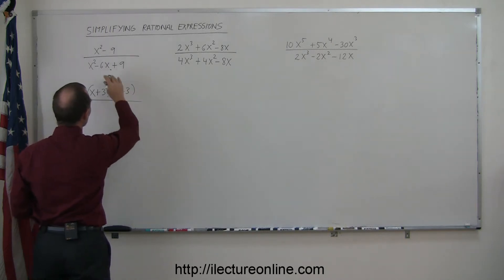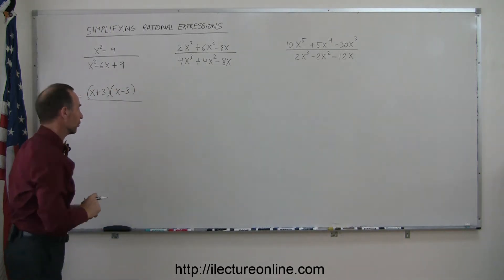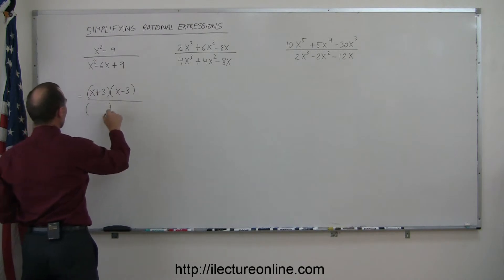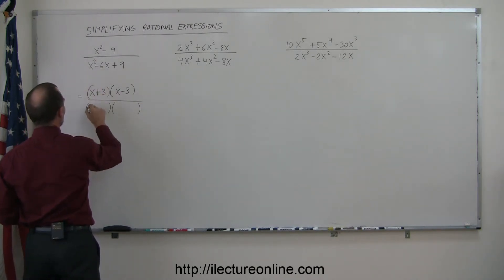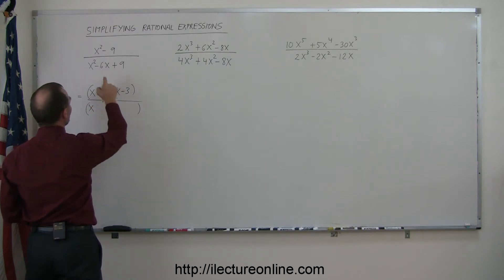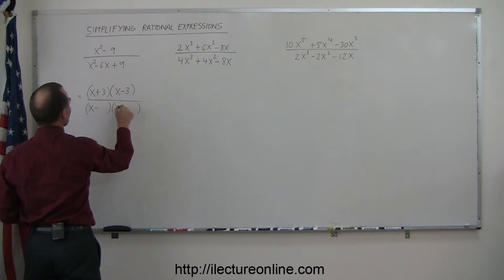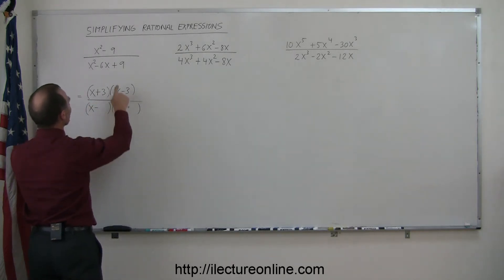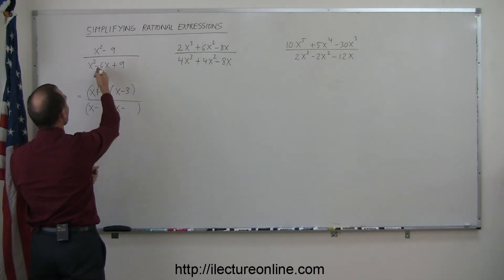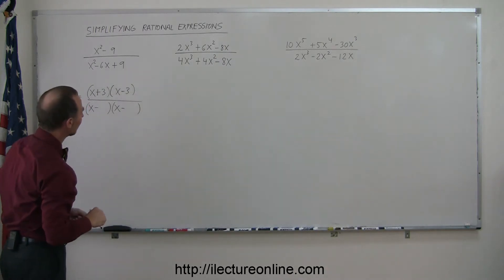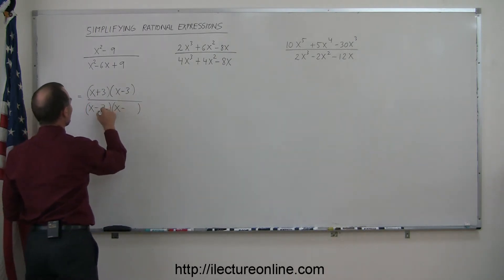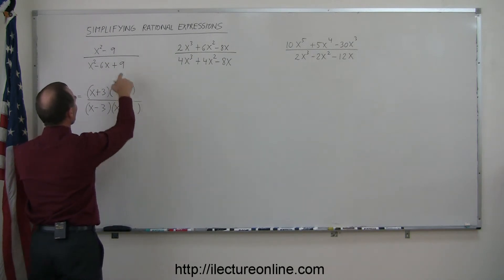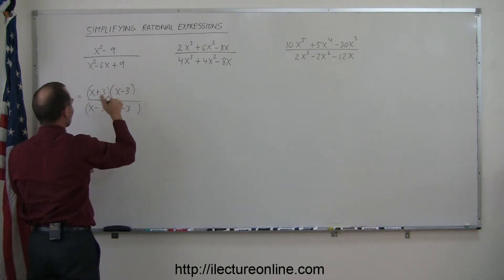When I look at the denominator, that looks also factorable, so I know I'm going to need a product of two binomials. To get x², I need an x and an x. When I look at the signs, I see a negative and a positive, which means they both must be negative, because when I multiply them I get positive 9, and when I add them I get negative 6. A 3 and a 3 will work — multiplying gives positive 9, adding gives negative 6.